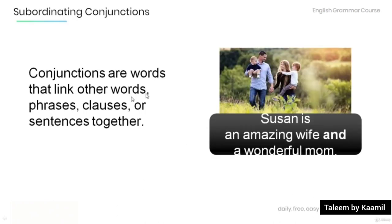Conjunctions are words that link other words, phrases, clauses, or sentences together. Have a look at the example over here. 'Susan is an amazing wife and a wonderful mom.' The word 'and' in this sentence is a conjunction, and it's used to link two parts together: 'Susan is an amazing wife' and 'a wonderful mom.'